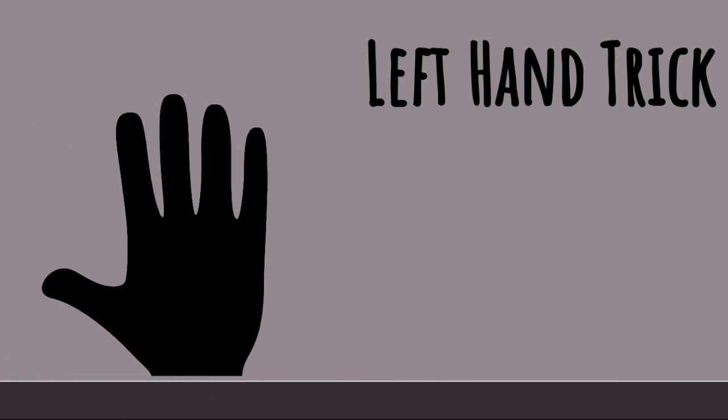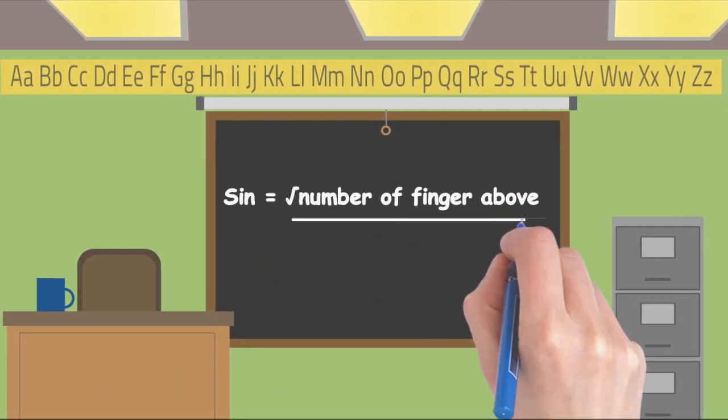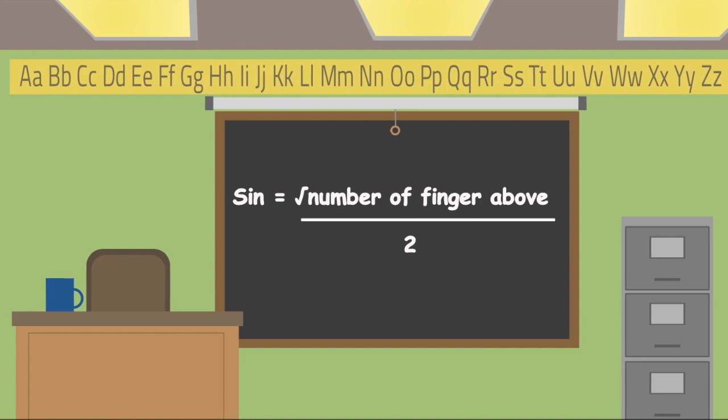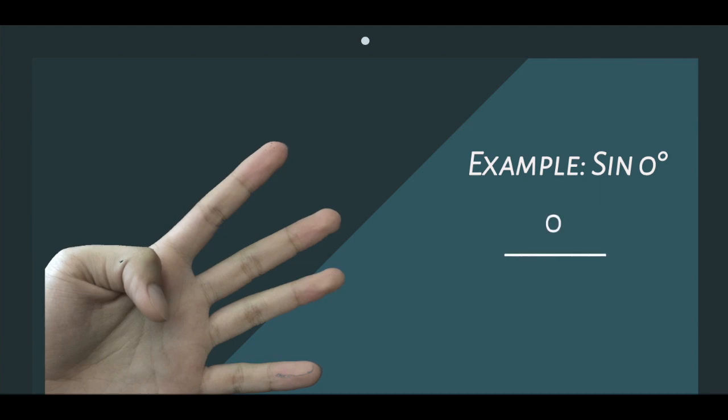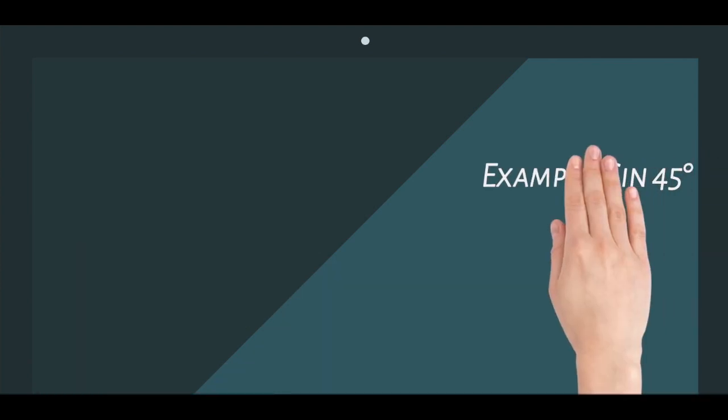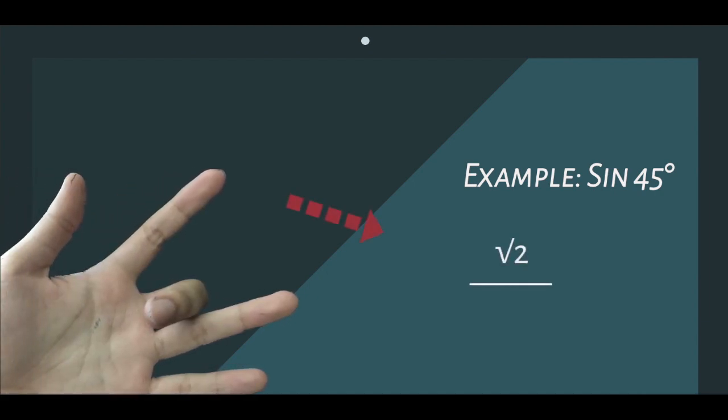We face our palms to our face. We use the thumb to represent zero degrees, index finger 30, middle finger 45, ring finger 60, and pinky finger 90. For sine, we square root the number of fingers above divided by two. For example, sine zero degrees: we bend our thumb down so we have zero fingers above, divide by two, so the answer is zero. Sine 45: we bend our middle finger down so we have two fingers above, so it will be square root 2 over 2.